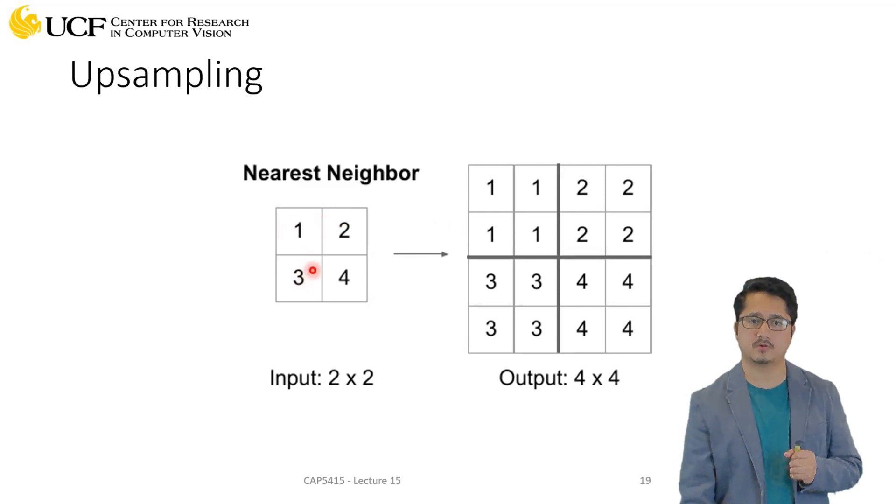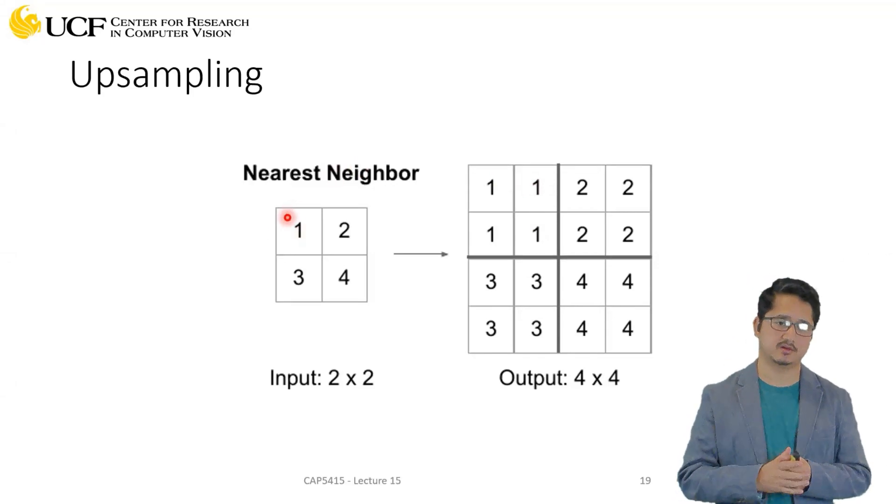If you have to upsample from 2x2 to 4x4, which means that each pixel is going to give you four different numbers, what you can do is you can actually use four different kernels.